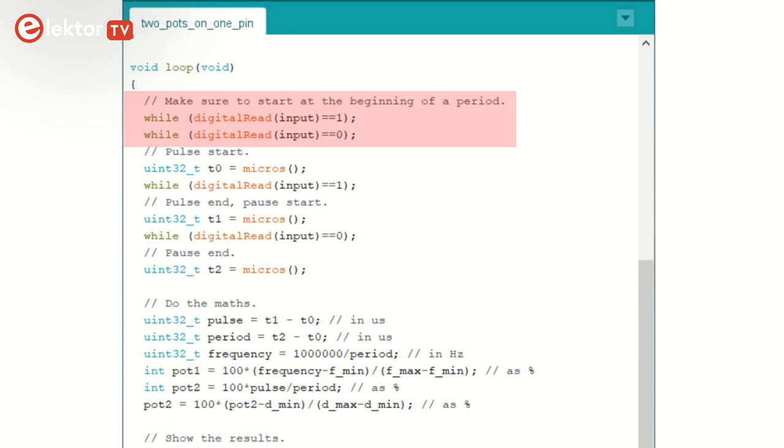Once the edge has been detected, the program writes down the starting time, t0, and waits for the next edge, a falling edge in my case. When this second edge arrives, the program writes down the time again, now as t1, and starts waiting for the third edge. When the third edge is detected, the time is written down once more as t2. We now have three timings from which we can calculate the frequency and the duty cycle.